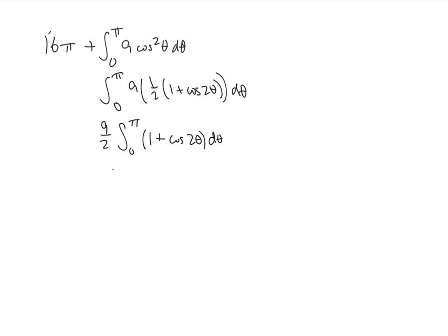And now that's a pretty easy antiderivative. Antiderivative of 1 is theta. Antiderivative of cosine 2 theta is one-half sine of 2 theta. And we're going to plug in 0 and π and subtract.